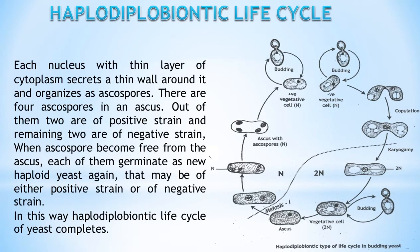Each nucleus with a thin layer of cytoplasm secretes a thin wall around it and organizes as ascospores. There are four ascospores in an ascus. Out of them, two are of positive strain and the remaining two are of negative strain.